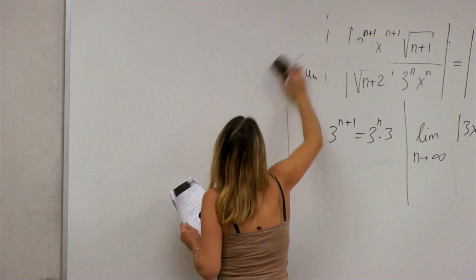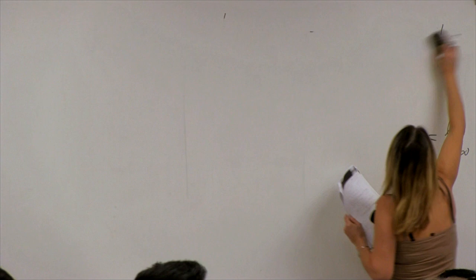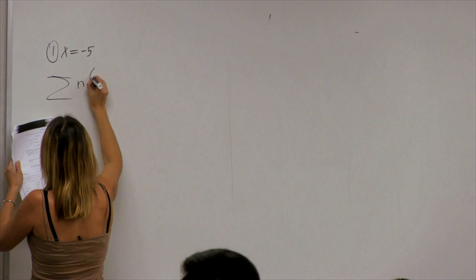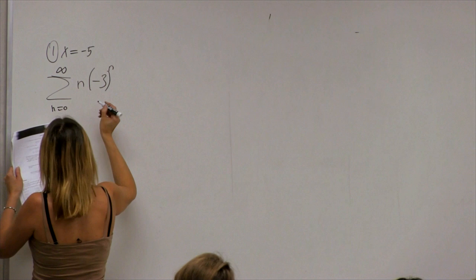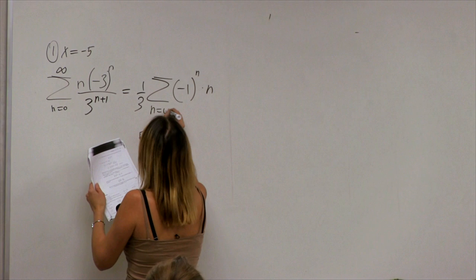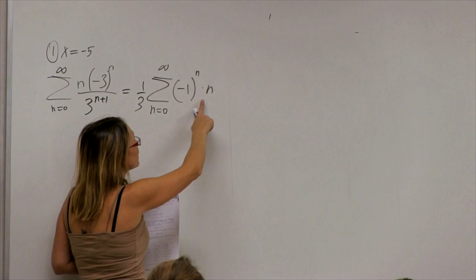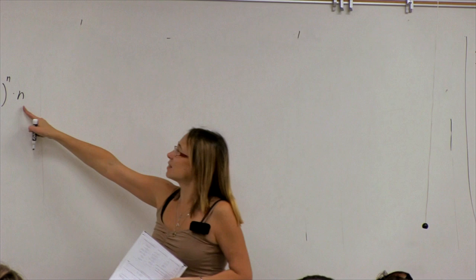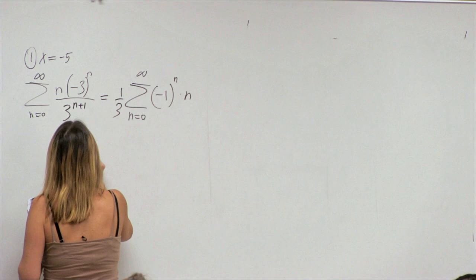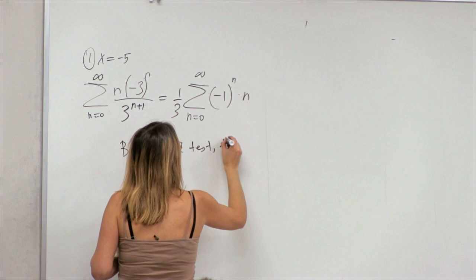At x equals −5: x+2 = −3, so I get Σ n(−3)^n / 3^(n+1) = Σ n(−1)^n / 3. This is a series whose terms alternate in sign and are multiples of n. The absolute values of the terms grow as n goes to infinity — they don't decay to 0. So by the divergence test, this series diverges.